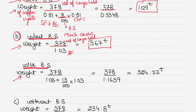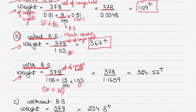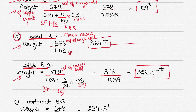With broken stowage for machinery cases, space is being wasted, so weight of cargo = volume of cargo hold ÷ (stowage factor + broken stowage). Broken stowage is 13% of the stowage factor, so 1.03 + 13% of 1.03 = 1.1639. That gives 378 ÷ 1.1639 = 324.77 tons. Comparing: 367 tons without broken stowage versus 324.77 tons with broken stowage — more cargo is loaded without broken stowage.